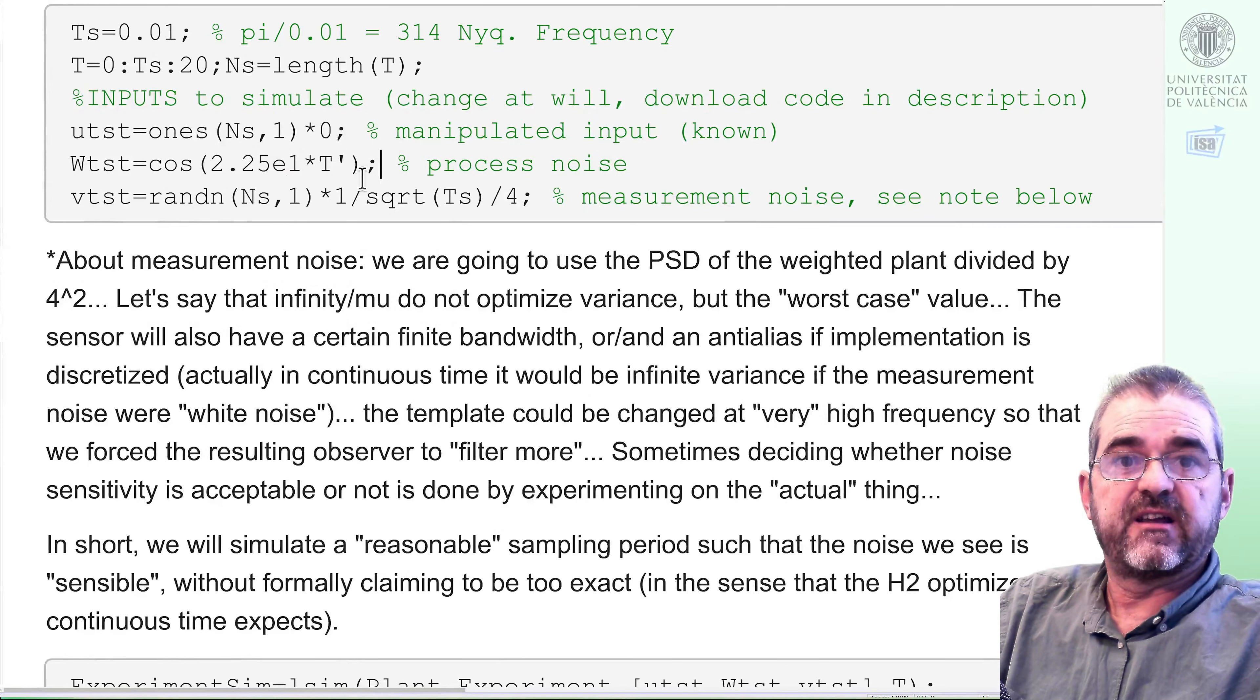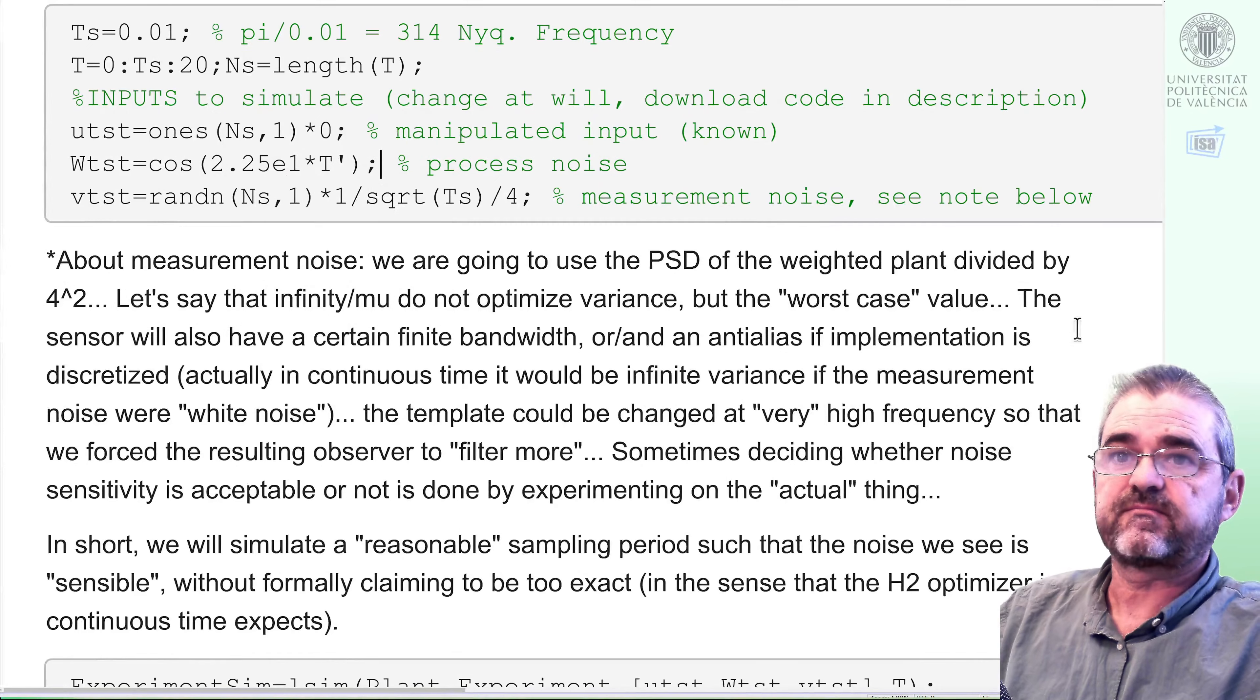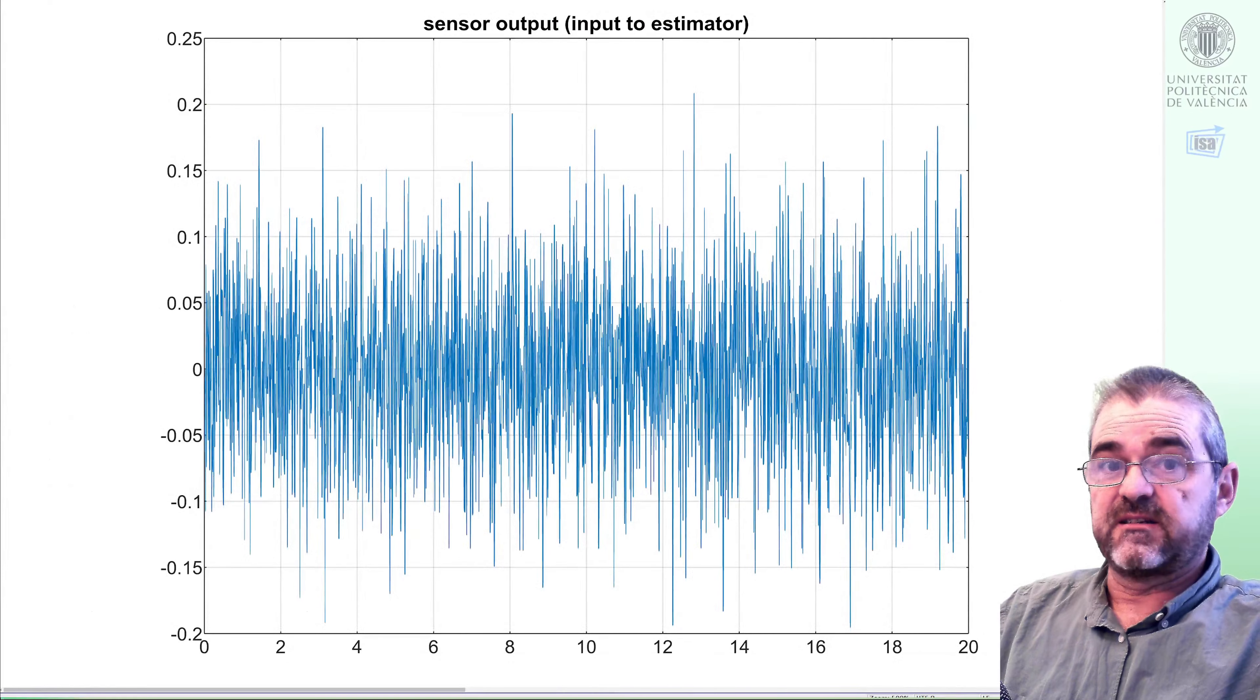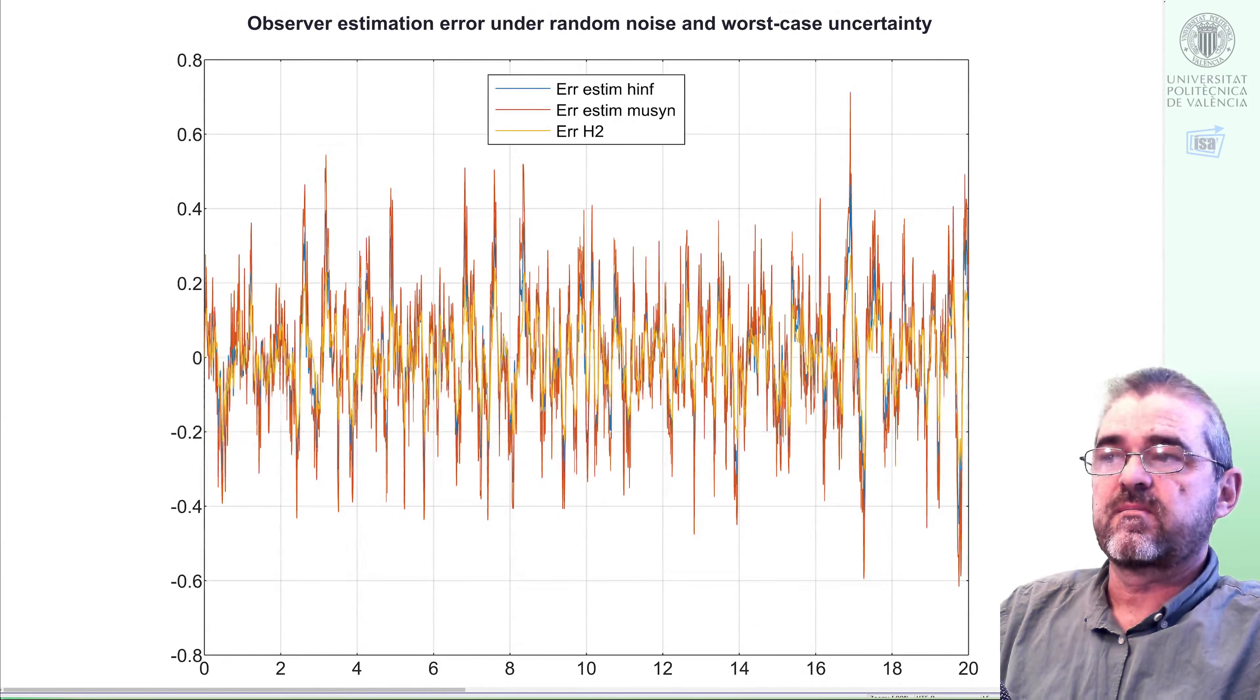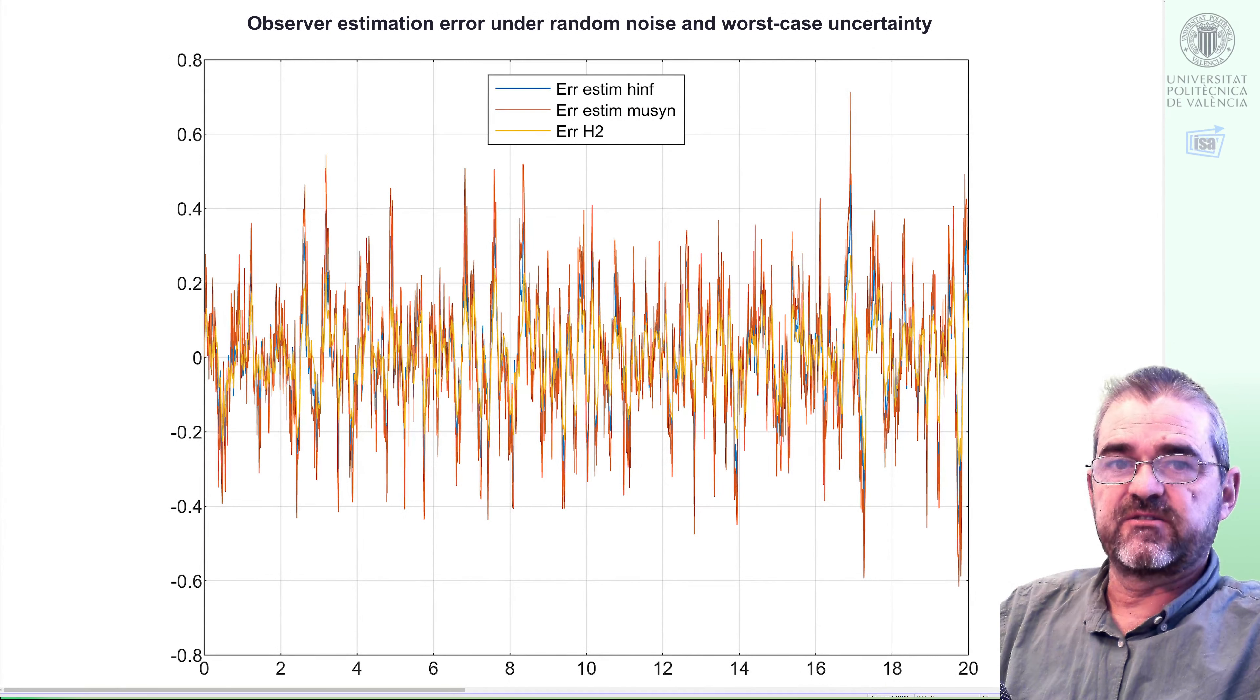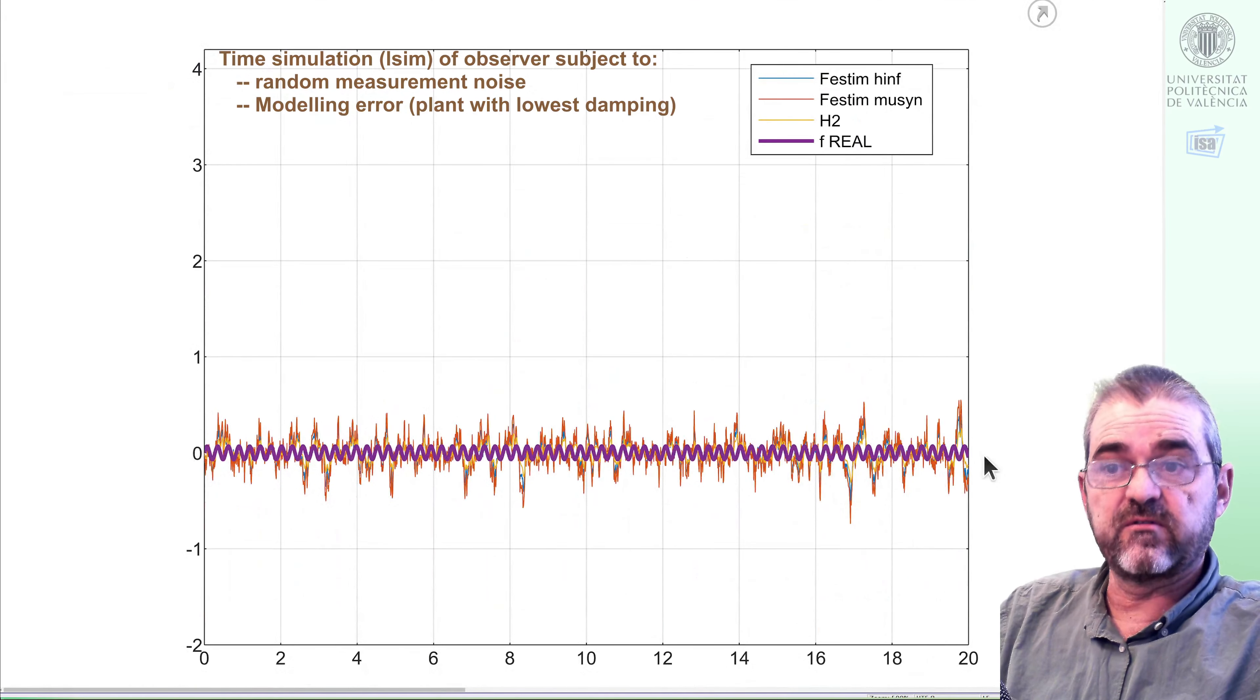And last, if I multiply by 10 again the frequency, then my signal-to-noise ratio is very bad. So the observers have a quite bad estimation in relative terms, in the sense that all three of them have an error amplitude or confidence interval around 0.3, 0.4, which is even larger than the actual value of the force.